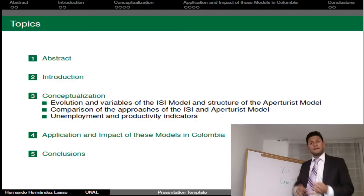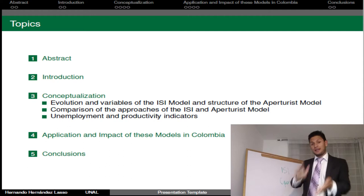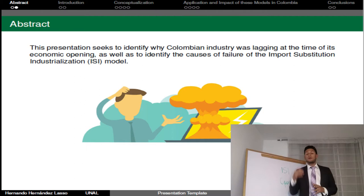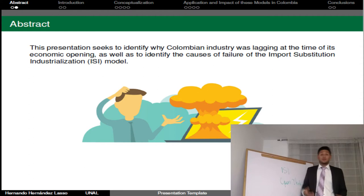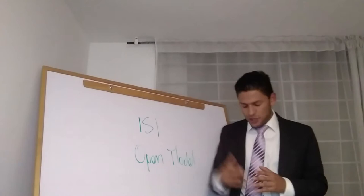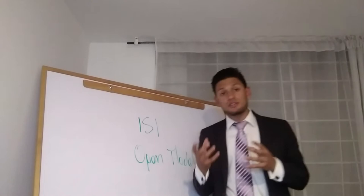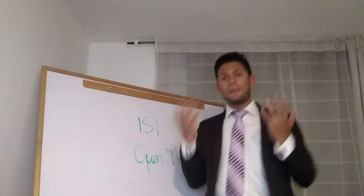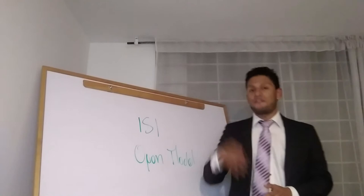The topics for this presentation are: Introduction, Conceptualization, Impact, and Conclusion. This paper argues that Colombian industry was lagging at the time of its economic opening, as well as the cause of failure of the Import Substitution Industrialization (ISI) Model. Two economic models seeking industrialization in Colombia are presented and contrasted. The impact of the post-1991 Aperturist economic open model is examined through several indicators to elucidate the cause of the failure of the ISI Model.